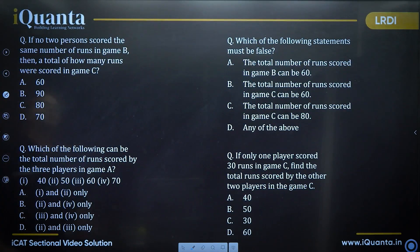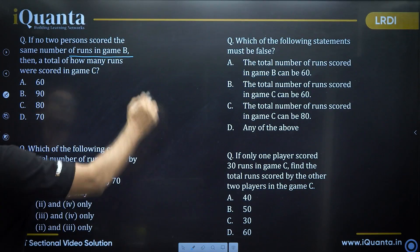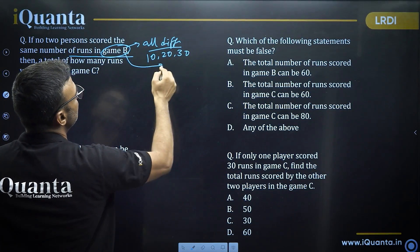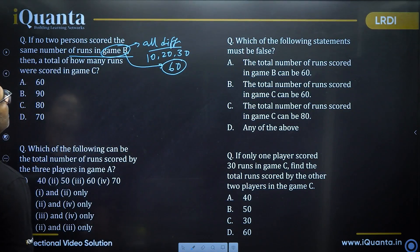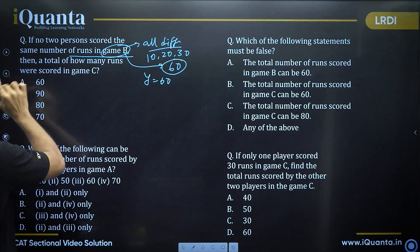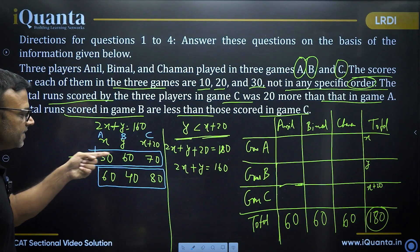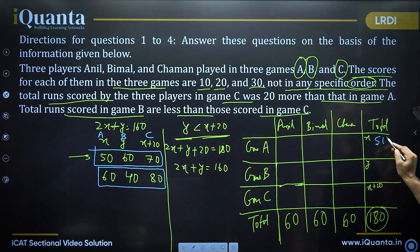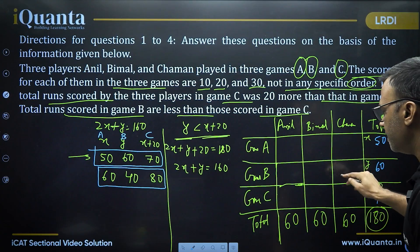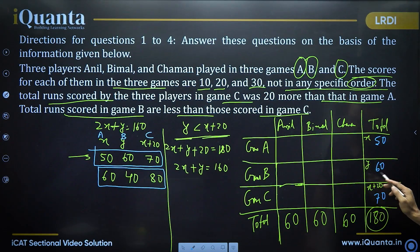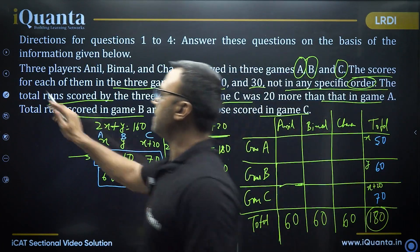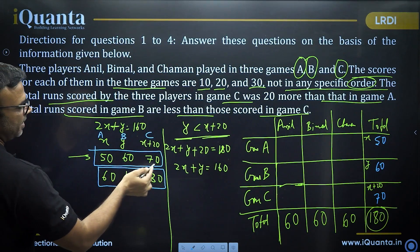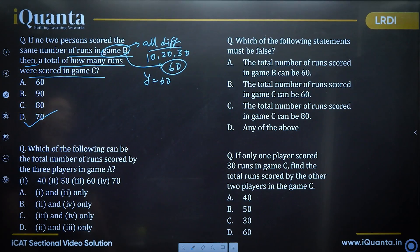First question: if no two persons scored the same number of runs in game B, all scores are different. So it must be 10, 20, 30, and the total of game B must be 60. So Y equals 60, which means only the first case applies: X=50, Y=60, game C = 70. The question asks for the total runs scored in game C. The answer is 70 — option D is correct.